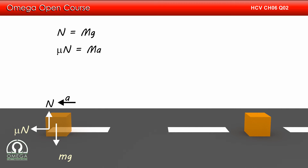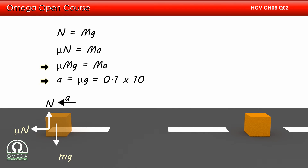Since net force is equal to mass into acceleration, mu into N must be equal to ma. Putting the value of normal, we get mu mg is equal to ma, which implies a is equal to mu into g. Putting the value of mu as 0.1 and g as 10 meters per second squared, we get acceleration is equal to 1 meter per second squared.